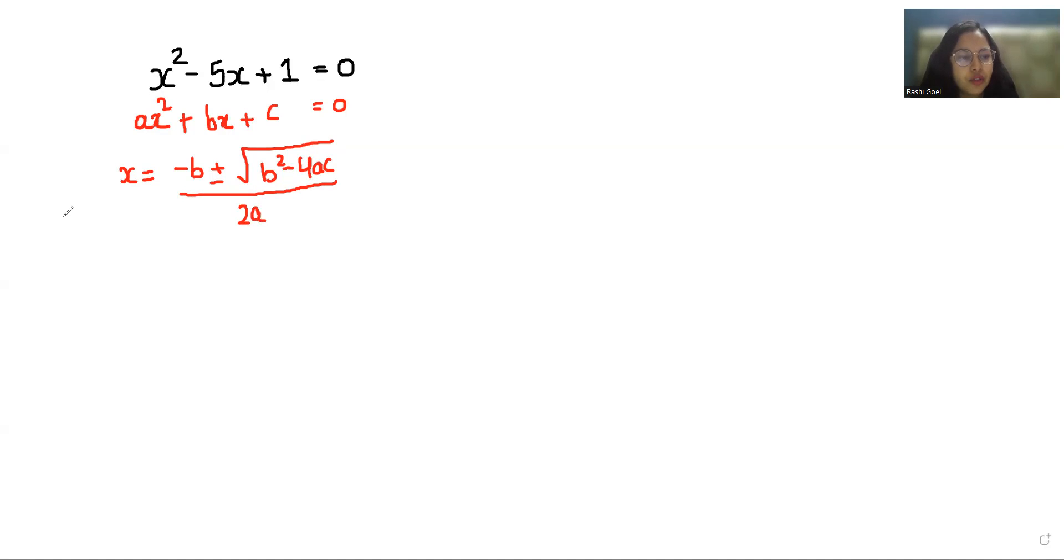equations, a is the coefficient of x². In the given question, the value of a is 1, b is -5, and c is the constant, which is 1. So let's put all the values. x